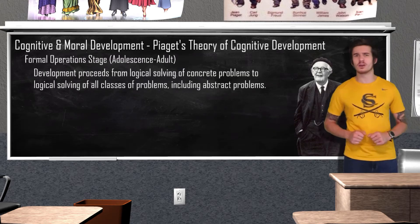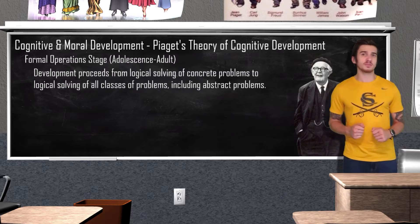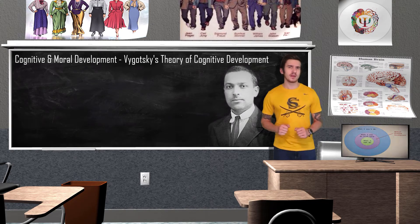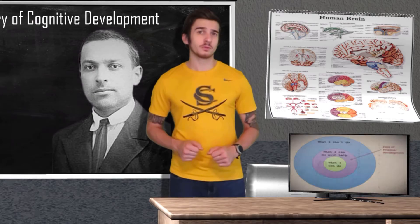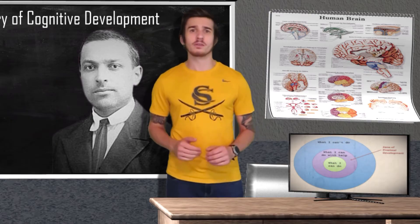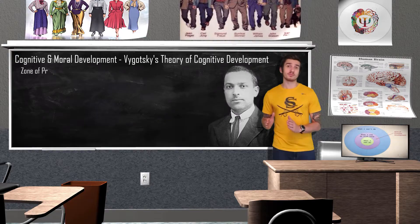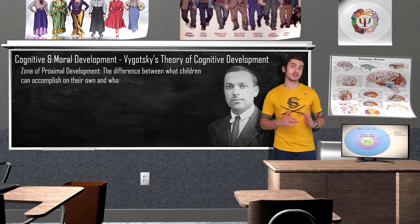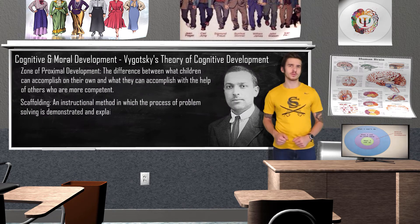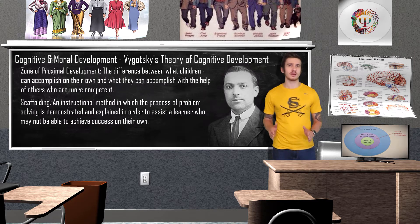While influential, Piaget's theory was criticized for not studying cognitive changes in adulthood. Russian psychologist Lev Vygotsky thought Piaget underestimated the impact of social and cultural environment on cognitive development. Vygotsky believed children could attain higher levels of cognitive development through help and instructions from others. He theorized the zone of proximal development (ZPD) — the difference between what children can achieve on their own versus with help from more competent others like parents, teachers, or coaches. Scaffolding refers to an instructional method where problem solving is demonstrated to assist a learner who cannot achieve success alone.